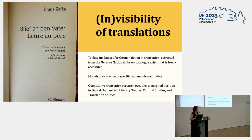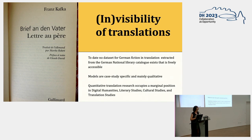To date, besides the one I'm preparing, to my knowledge there is no dataset freely accessible for German fiction in translation extracted from the German National Library Catalog. As a DH scholar, one will continuously ask: where's the translation data and where's the translation research in DH?